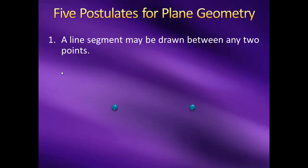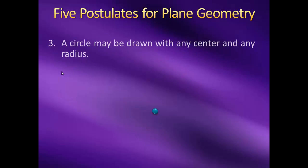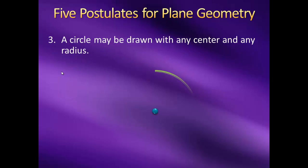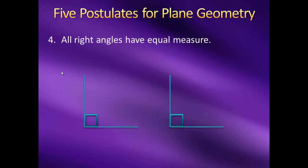The first axiom states that a line segment may be drawn between any two points. The second axiom states that a straight line may be extended indefinitely. The third axiom states that a circle may be drawn with any center and any radius. The fourth axiom states that all right angles have equal measure. Pretty simple assumptions so far, right? Well, let's take a look at the fifth axiom.